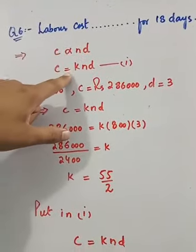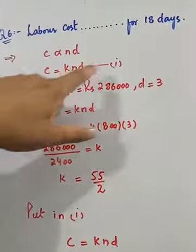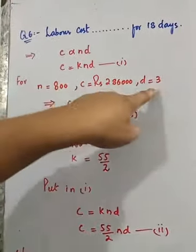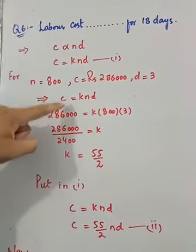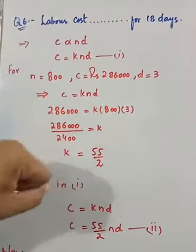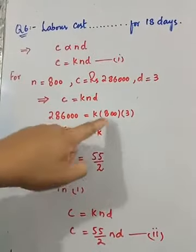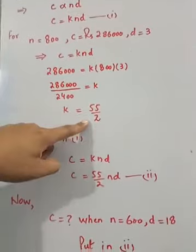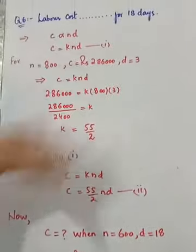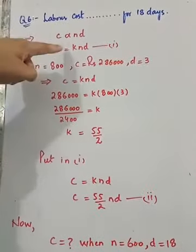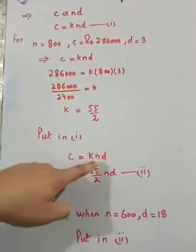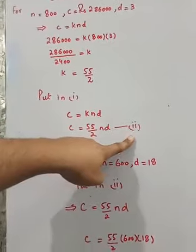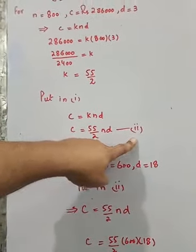Since it's directly proportional to n and d, we remove the proportionality sign and introduce constant k. So c = knd, this is equation 1. Now the first set is given where n, c, and d are all given. Put these values in the equation and you'll get the value of k.